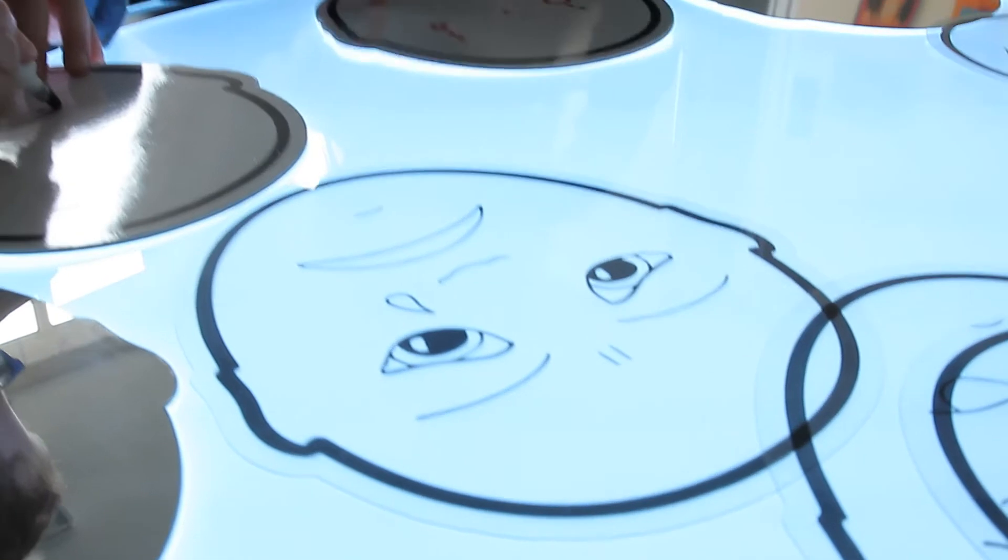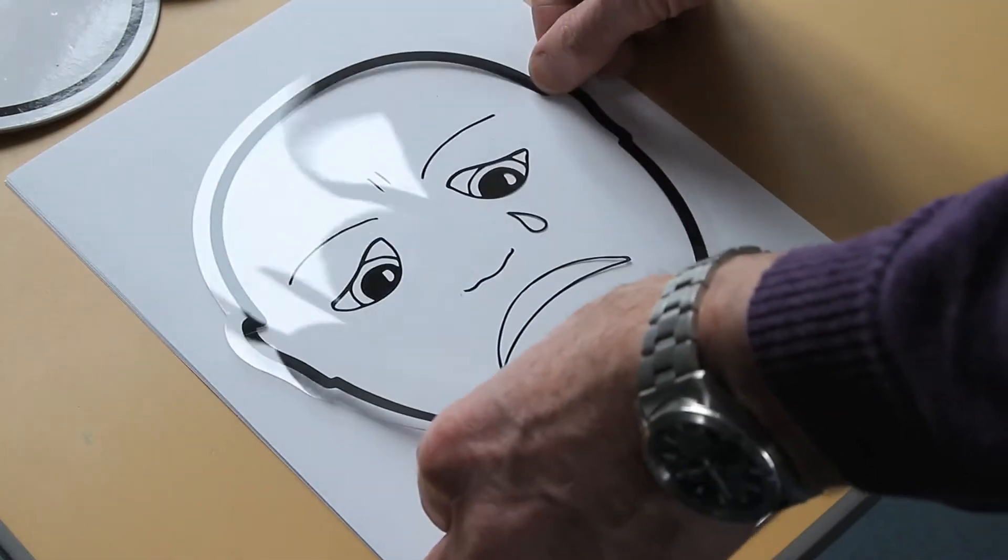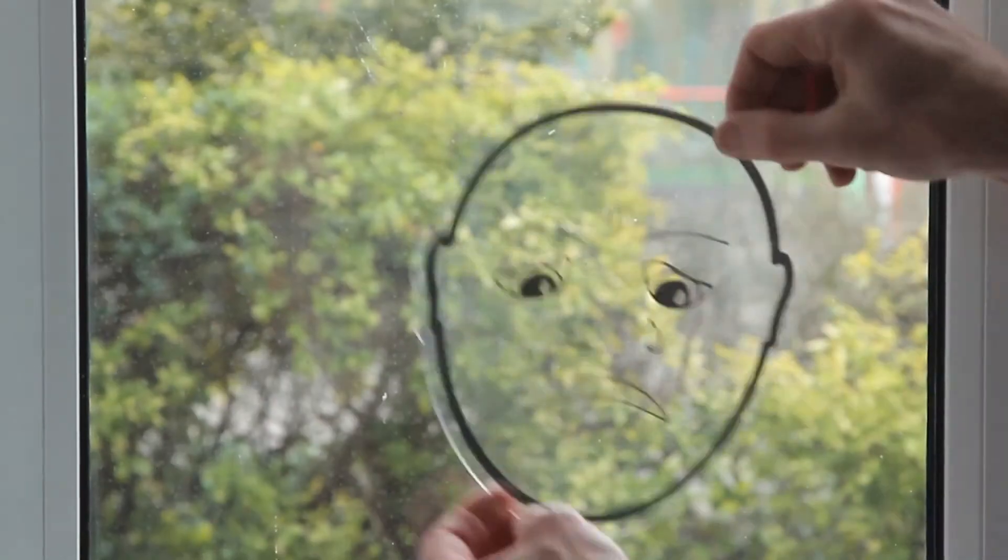The clear acetate facial expressions can best be seen on a light panel, but can also be clearly seen when placed on a white sheet of paper or by a window.